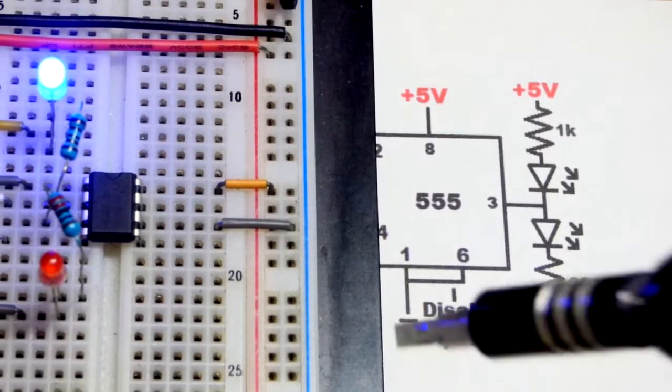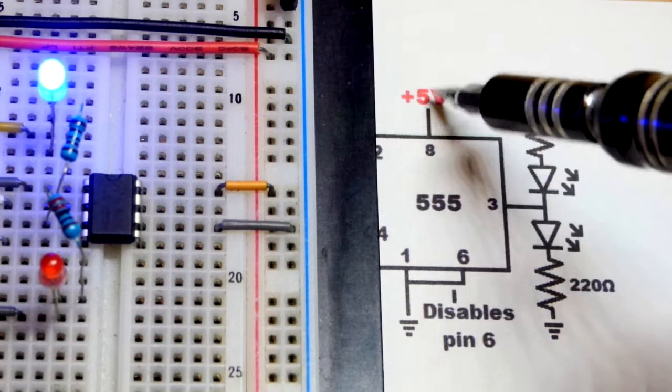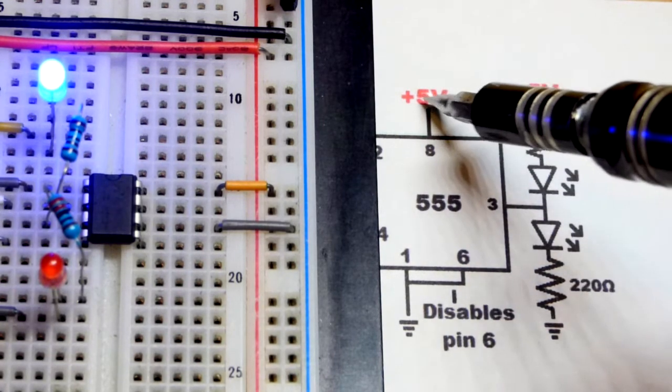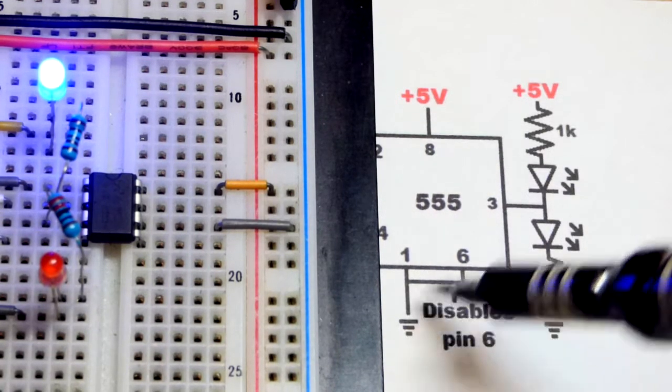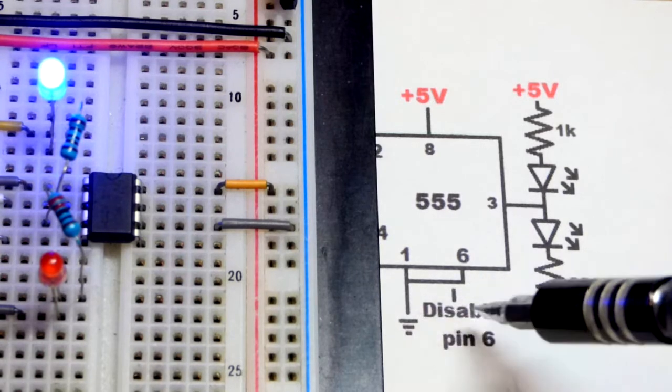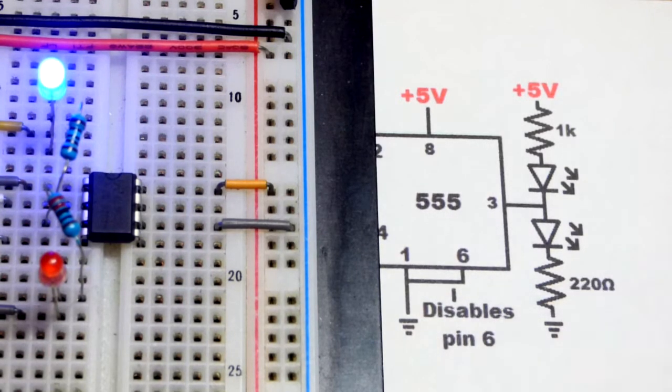Now, pin number 6, that is the threshold pin. It's waiting for two-thirds of the supply voltage, so close to 5 volts. If we connect it directly to ground, that holds it at 0 volts, that tells it not to do anything.